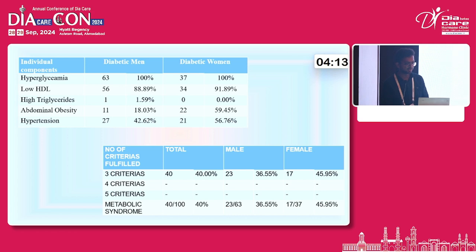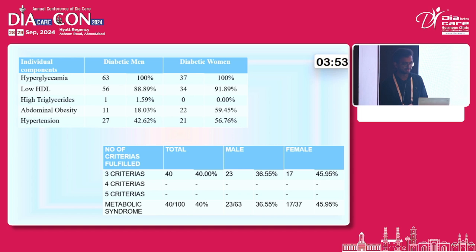Looking at individual components: among the 63 diabetic men, low HDL was found in 56, high triglyceride level in 1, abdominal obesity in 11, and hypertension in 27 patients. Among 37 diabetic women, low HDL in 34, abdominal obesity in 22, and hypertension in 21. There were no patients matching 4 or 5 criteria.